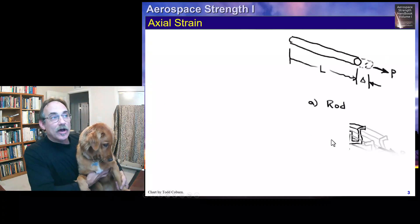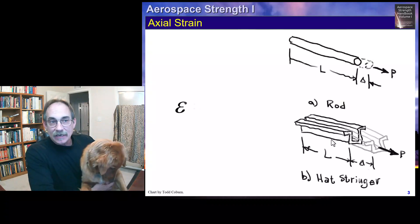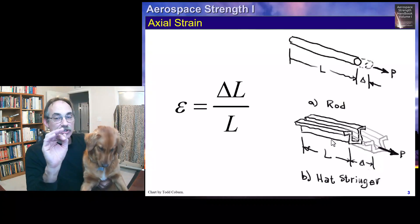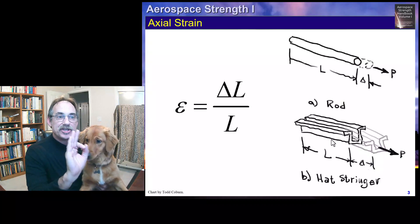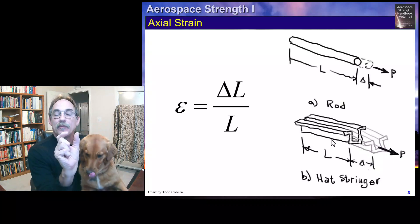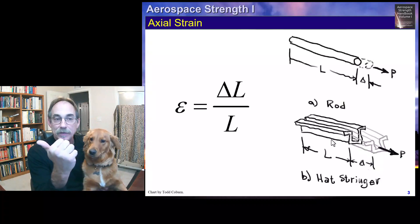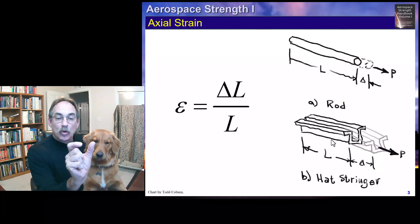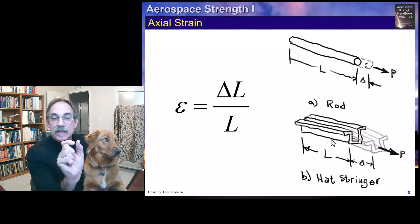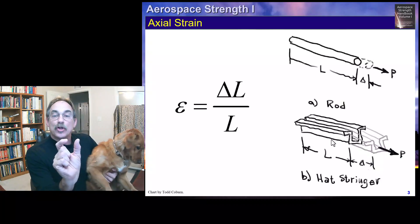The next formula we need to know is axial strain. We're going to learn Hooke's Law in our next lecture, but here we need to just understand axial strain. Remember, if we load any structural member with a force P, it's going to grow in length, and as it gets longer, that's called strain.